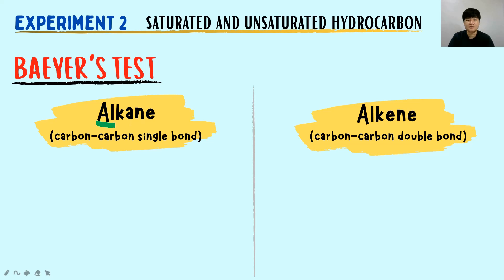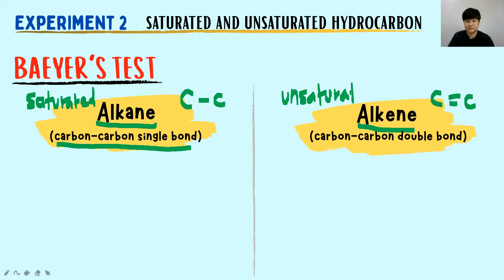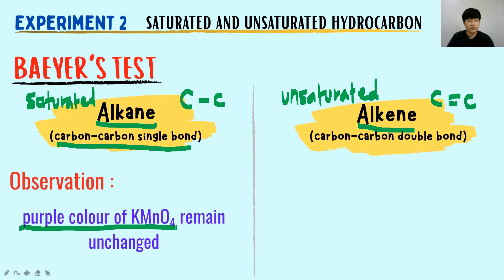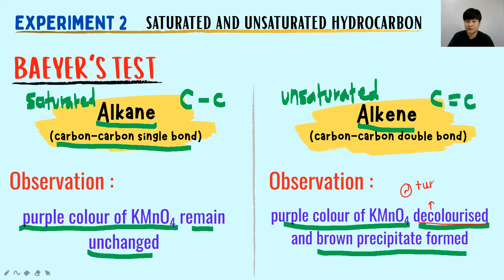In alkane you have a carbon-carbon single bond (saturated hydrocarbon), while in alkene you have a carbon-carbon double bond (unsaturated hydrocarbon). The observation of the Baeyer test in alkane is the purple color of KMnO₄ remains unchanged. While the observation in alkene is that the purple color of KMnO₄ decolorizes and a brown precipitate forms. The word 'decolorize' can also be replaced by 'turn colorless.'